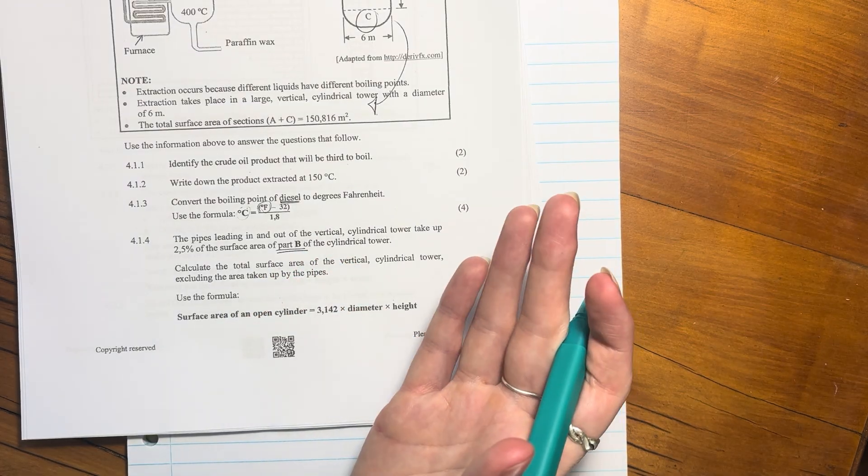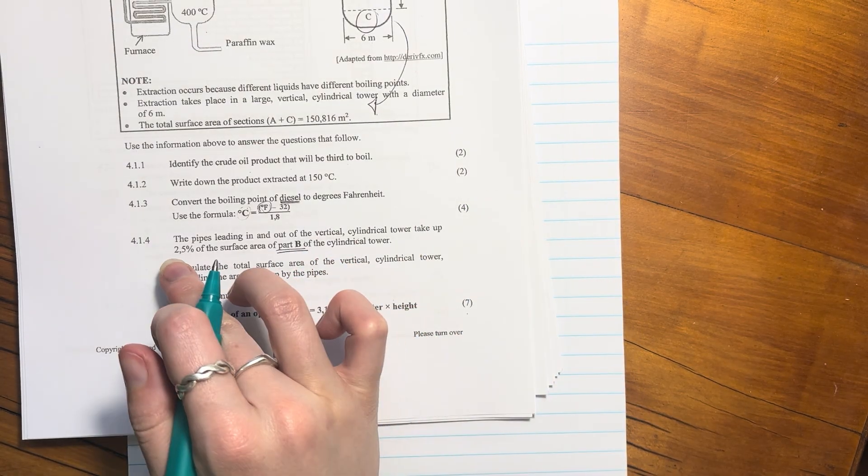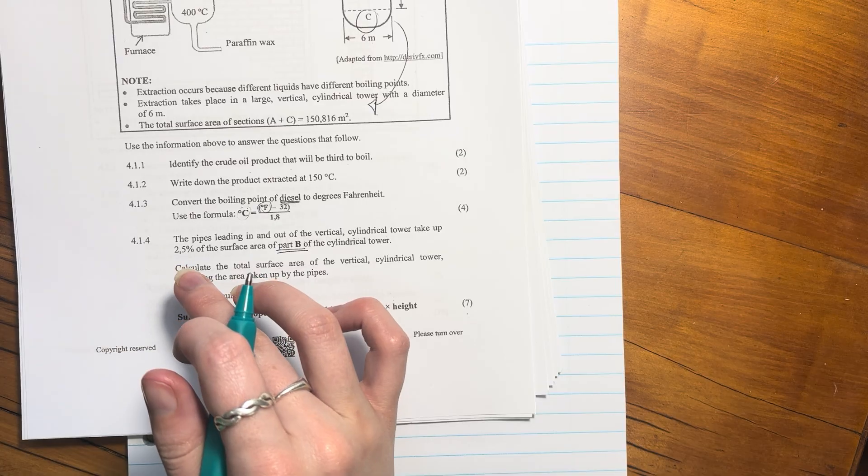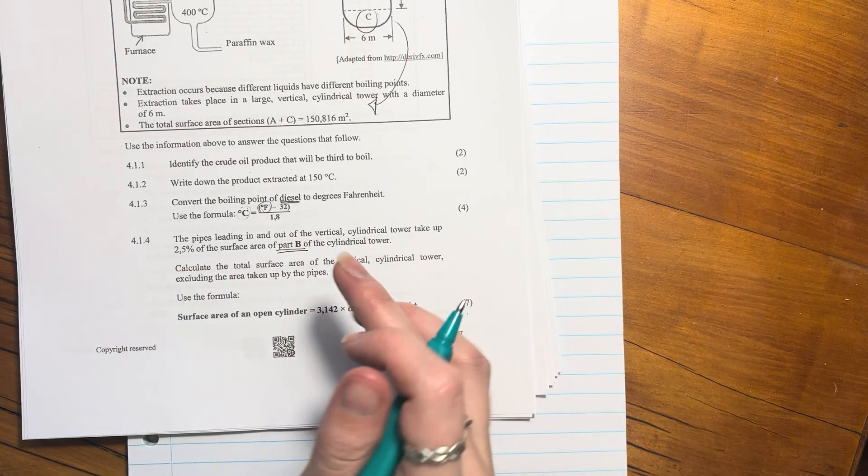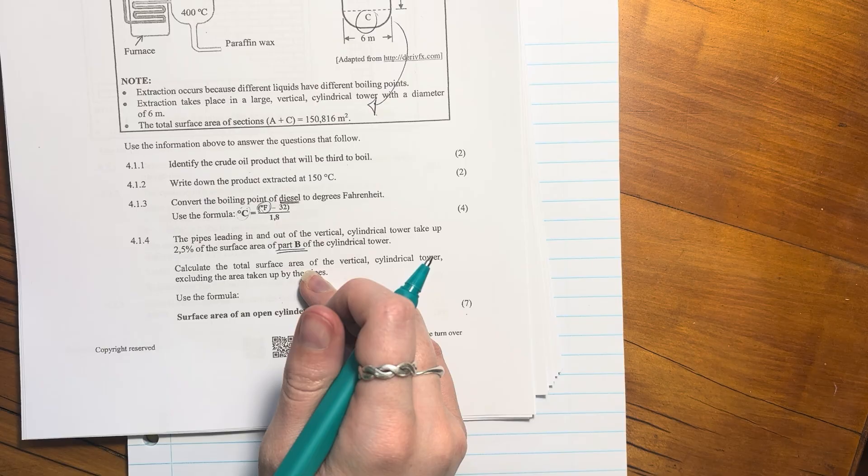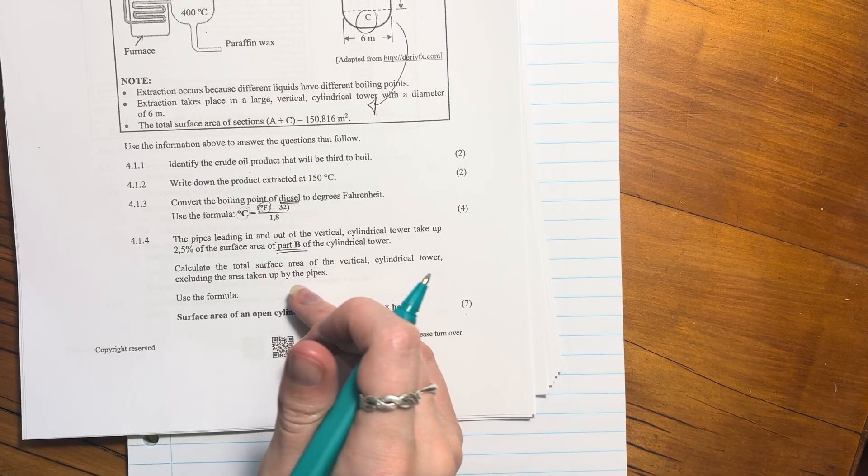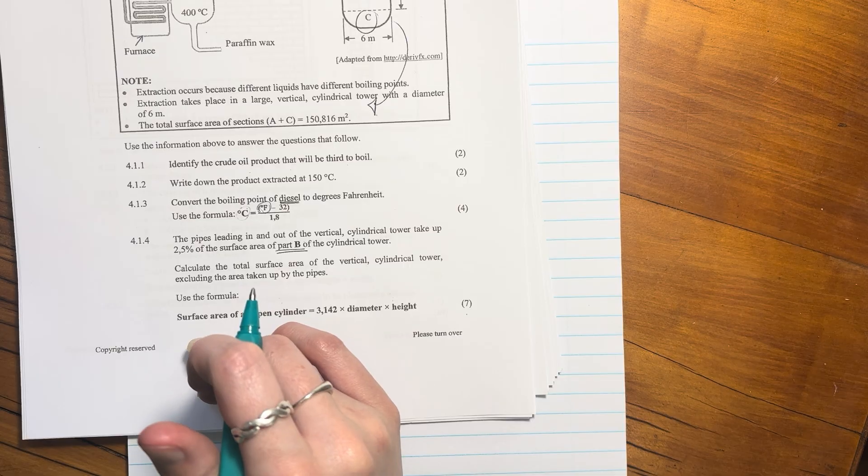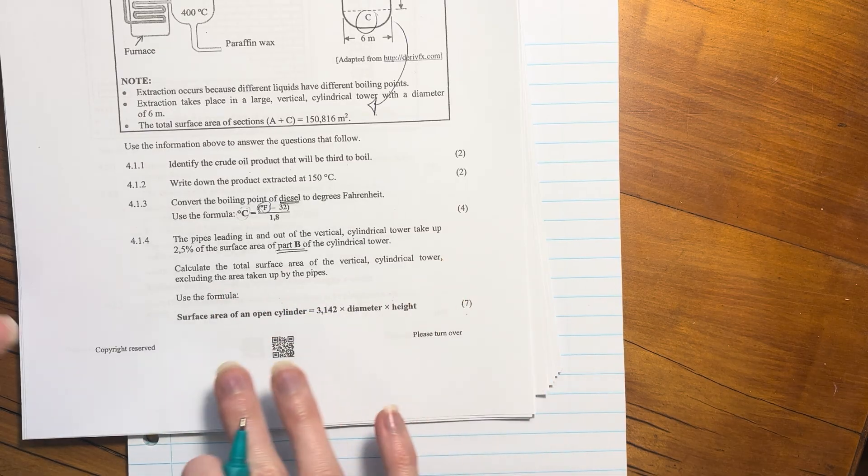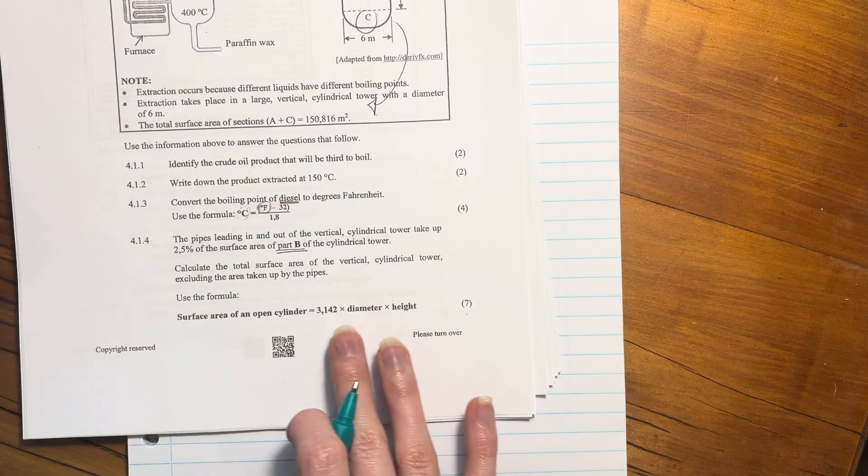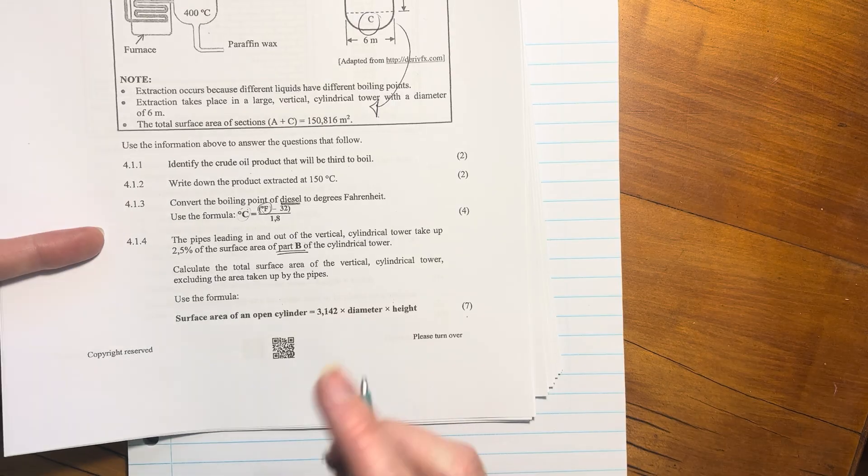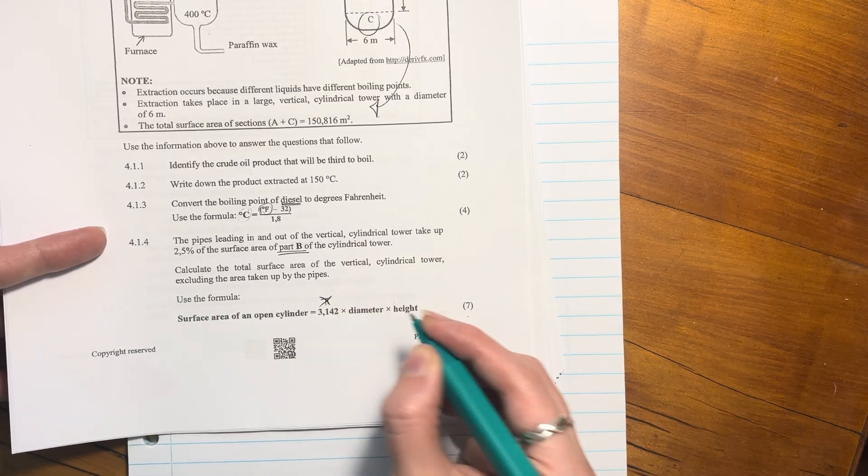So we know that when we work out the surface area of part B, we have to subtract off 2.5% because that's for the pipes. Calculate the total surface area of the vertical cylindrical tower, excluding the area taken up by the pipes. They've also given us this formula, 3.142. Remember, use that and not pi.